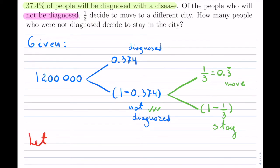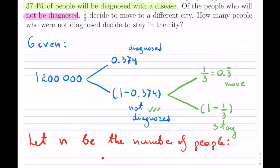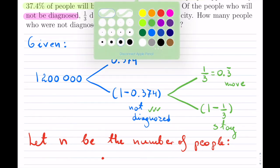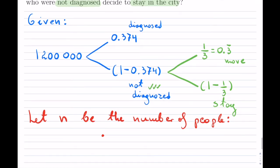So let n be the number of people. And now, which ones do we want? Let's see what they're saying there. How many people who were not diagnosed decide to stay in the city? So they want not diagnosed and stay.